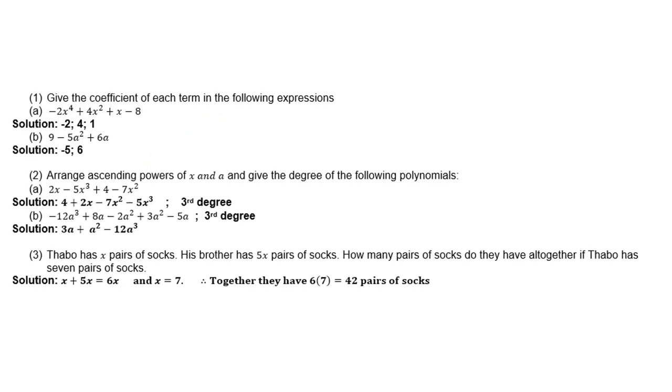Let's look at the next example. Give the coefficient of each term in the following expression: -2x⁴ + 4x² + x - 8. So the solution is -2, 4, and 1. Part B: 9 - 5a² + 6a. The solution is -5 and 6.